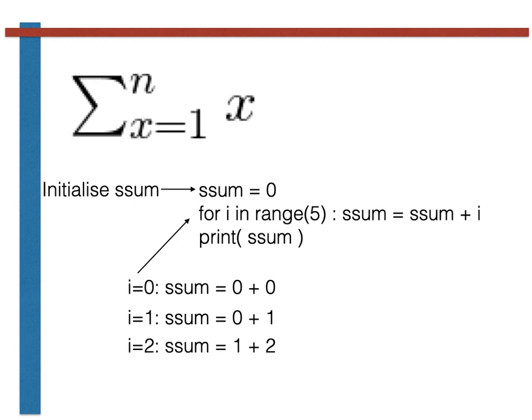On the third pass through the loop, we have i equals 2. We thus set ssum equal to the current value of ssum, which is 1, and we add i to that, which is 2. So ssum is thus equal to 3, once we have passed through the loop 3 times.